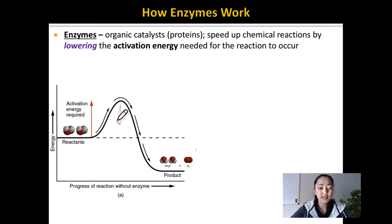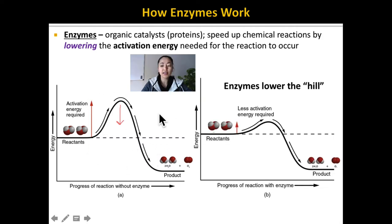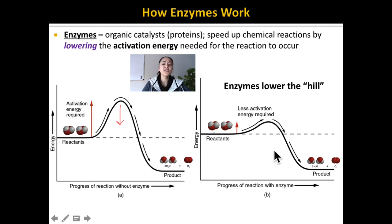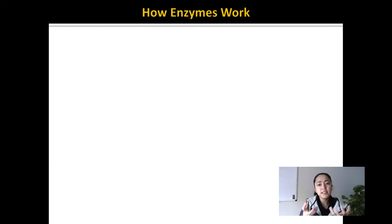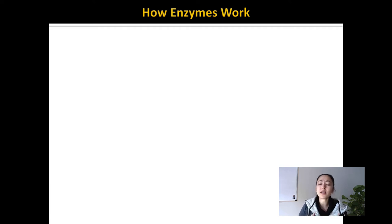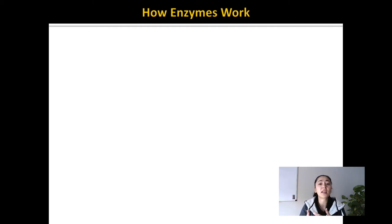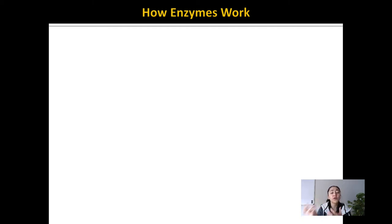Enzymes are organic catalysts. Most enzymes are proteins, and they speed up chemical reactions by lowering the activation energy needed for a reaction to occur — they lower this hill. So this would be a reaction without an enzyme. If an enzyme was present, notice that the hill is much smaller, so there's less energy that needs to be inputted for this reaction to occur. What they're doing is providing a location for the reaction to occur and helping to modify the chemical bonds between atoms to rearrange the molecules.